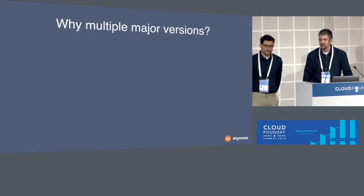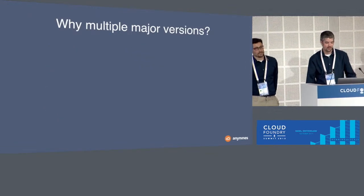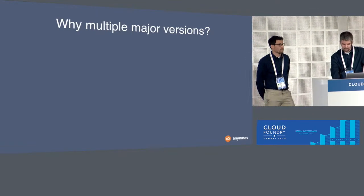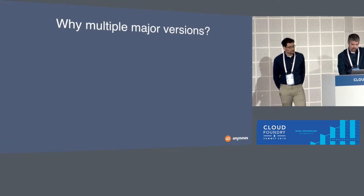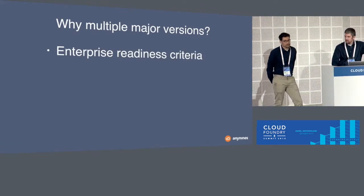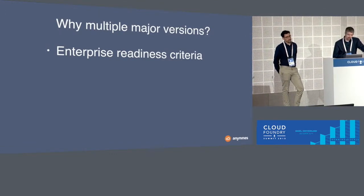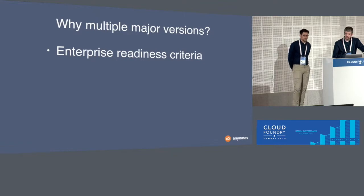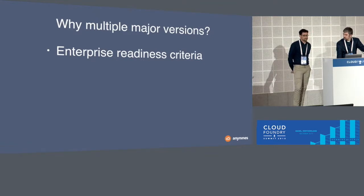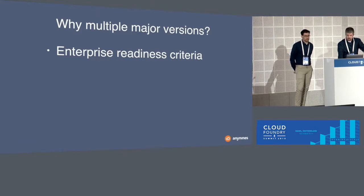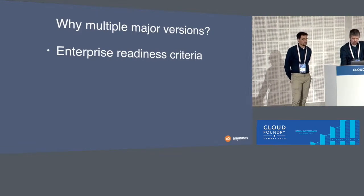Let's look at why it makes sense to have multiple major versions of BOSH releases. First, there is a Pivotal enterprise readiness criteria that you should support at least two versions of a service — the current one and the one before. As we want to offer our services on PivotalNet, that is one reason why we support multiple versions.